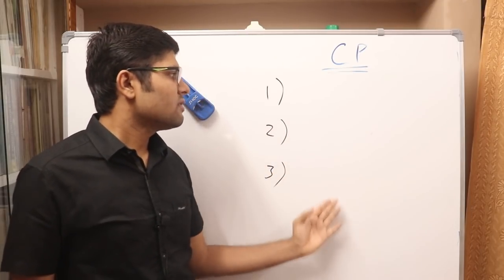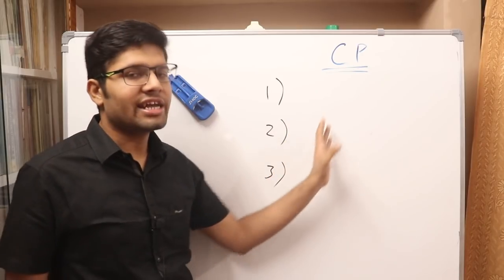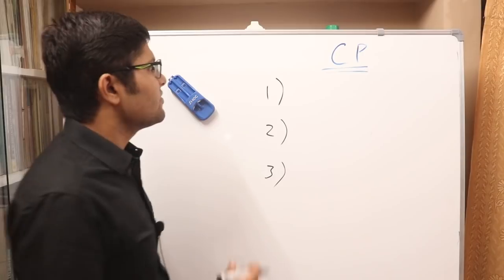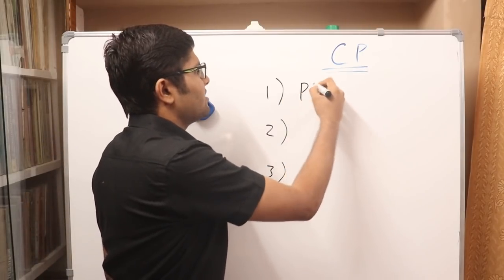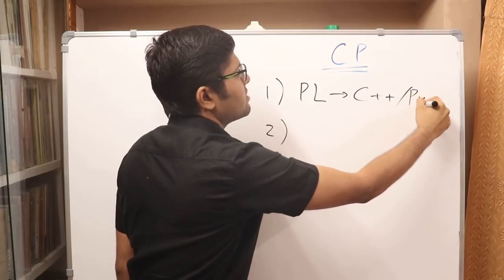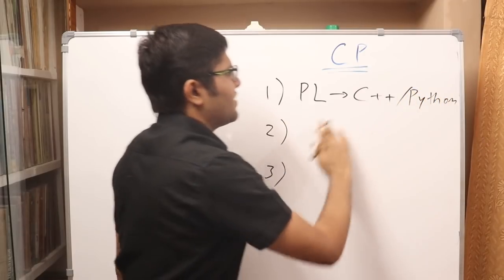I'll tell you three levels of competitive programming. You can start from anywhere, you could be at any level. So I'll tell you what to do in each step. So first of all, I would recommend you to get good in one programming language. It could be C++ or Python. So why am I saying this?